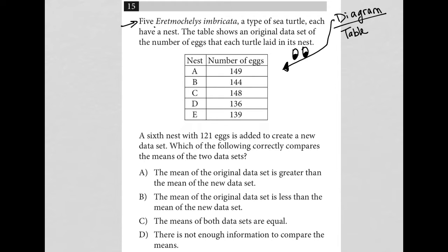It says five... I'm going to just not even care about this word. I'll call it EI. All right, so five EI, a type of sea turtle, each have a nest. Okay, so five sea turtles have a nest.